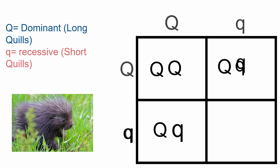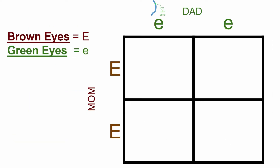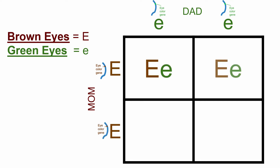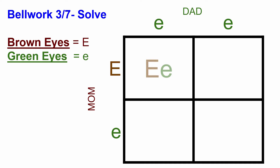So now you know the basics of inheritance — it's all about genes, it's no coincidence. So let's use Punnett squares to figure it out; the science of genetics is what it's all about. From dominant genes to recessive, we can see how traits are inherited, it's a guarantee.